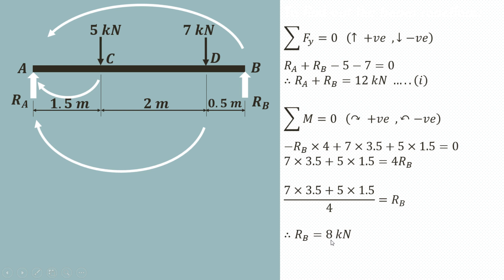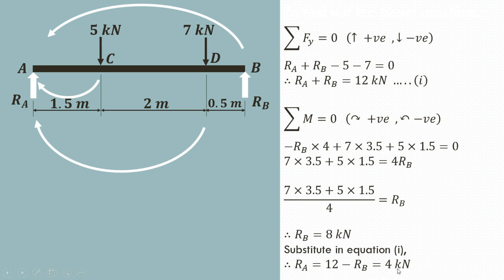Substituting the value of RB into equation 1: RA equals 12 minus RB, that is 12 minus 8, which gives RA equals 4 kN. So we have calculated the reactions RA equals 4 kN and RB equals 8 kN.